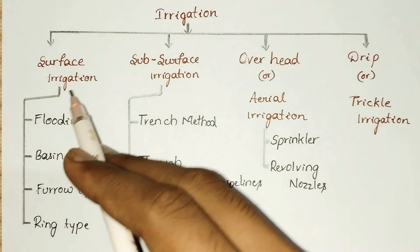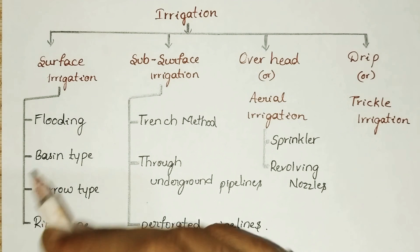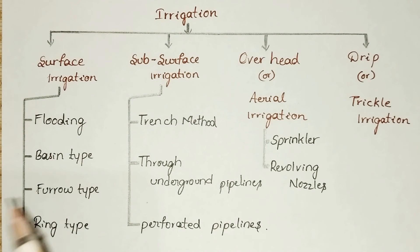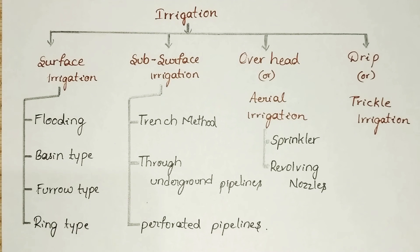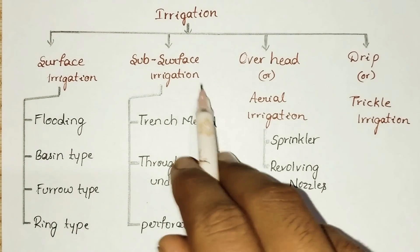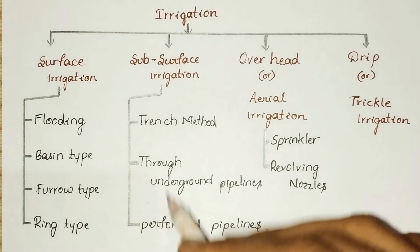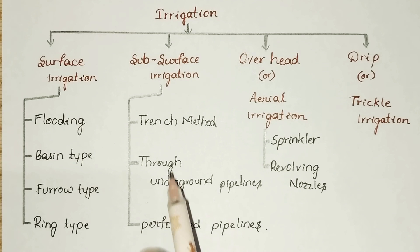Surface irrigation has four subclasses: flooding, basin type, furrow system, and ring type. Subsurface irrigation has three methods: trench method, trench method through underground pipelines, and perforated pipelines.